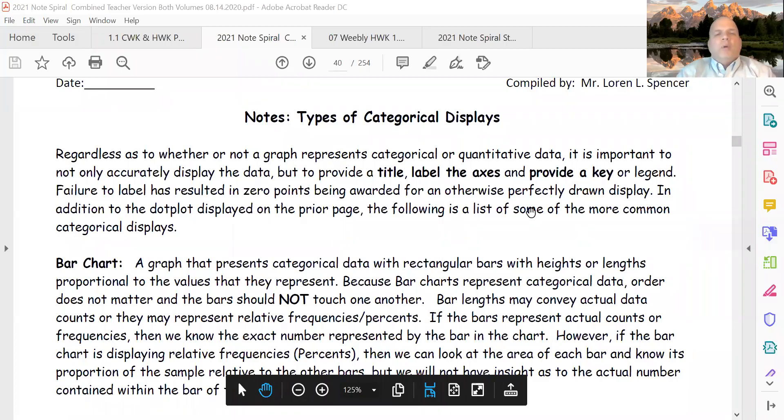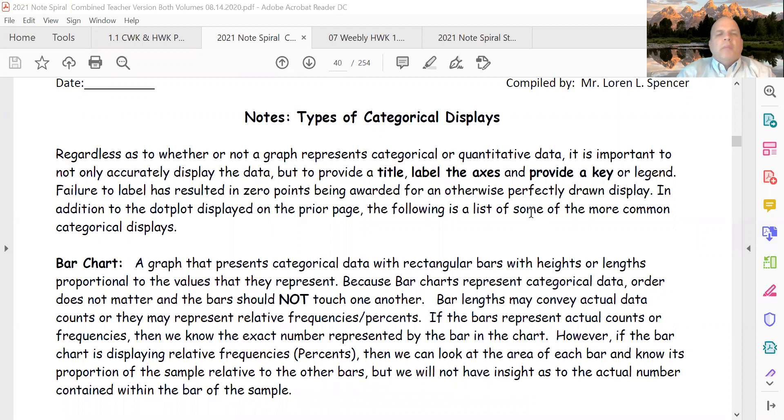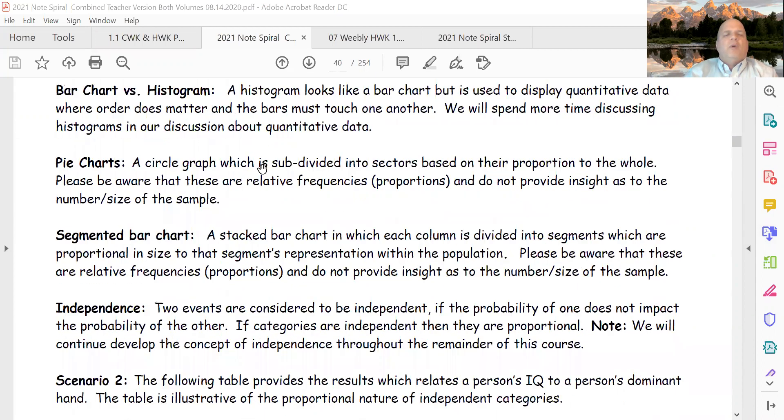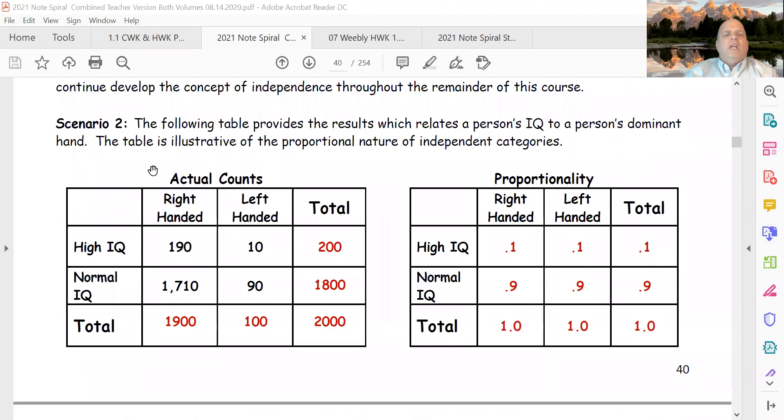Alright, we're going to be working with independence. I know the top of the page, I'm looking at page 40, says types of categorical displays. But on this page in video 17 we briefly looked at independence, so I'm going to go to the bottom of that page. This is page 40 and we discussed this in detail in video 17.